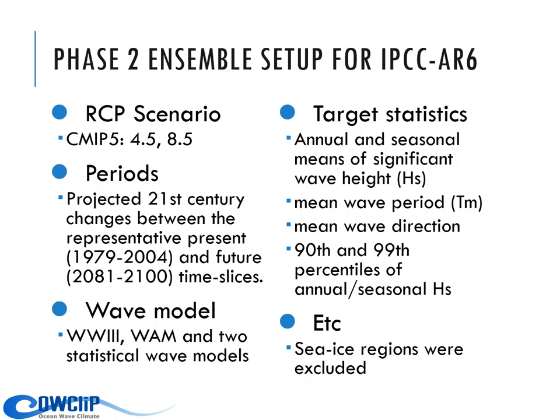In phase two of the COWCLIP projection, we changed the scenario from SRES to the RCP scenarios. We now deal with RCP 4.5 and RCP 8.5 for climate impact. We increased the number of wave models from two to three to four. We use two different dynamic wave models, which are WAVEWATCH III and WAM, and also two different statistical wave models. We also expanded our wave projections to include the 90th and 99th percentile of annual and seasonal wave height.